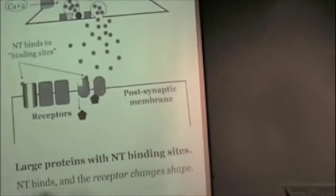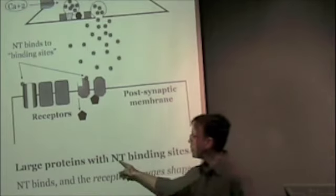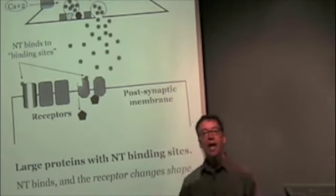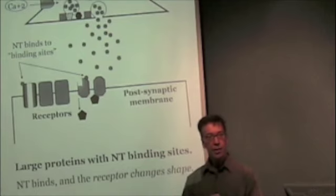So post-synaptic receptors are large proteins with neurotransmitter binding sites. The neurotransmitter binds, and then the receptor changes shape, and then there is going to be some kind of consequence for the cell.